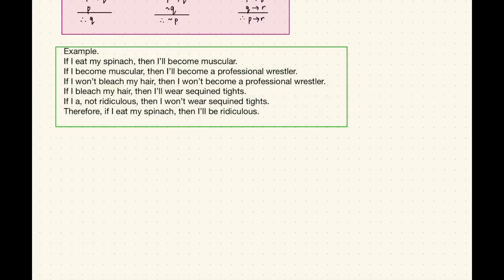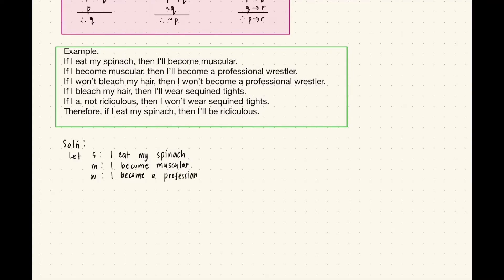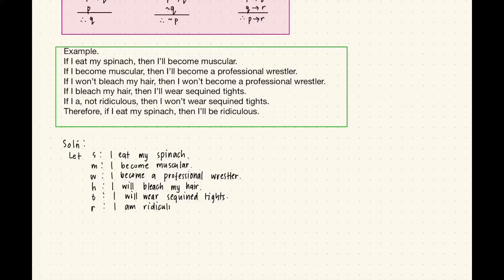Let's break this down into logical statements. Let s be 'I eat my spinach,' m be 'I become muscular,' w be 'I become a professional wrestler,' h represent 'I will bleach my hair,' t be 'I will wear sequin tights,' and r be 'I am ridiculous.'